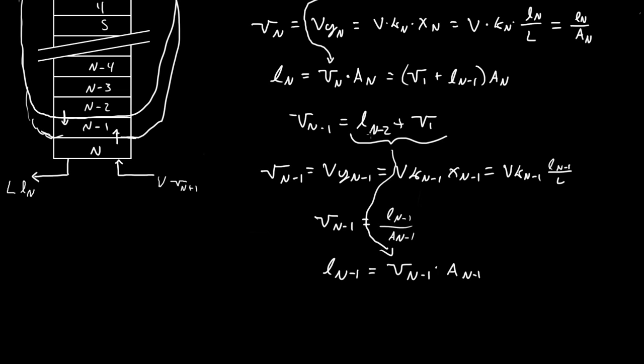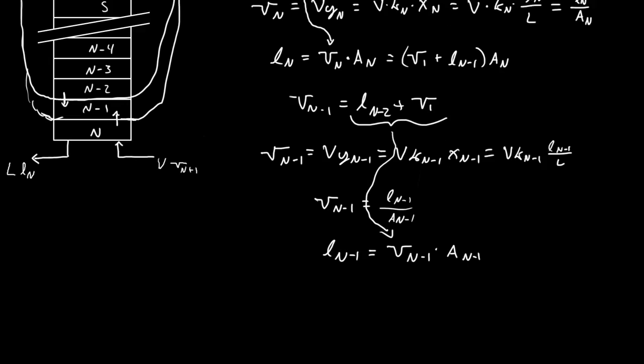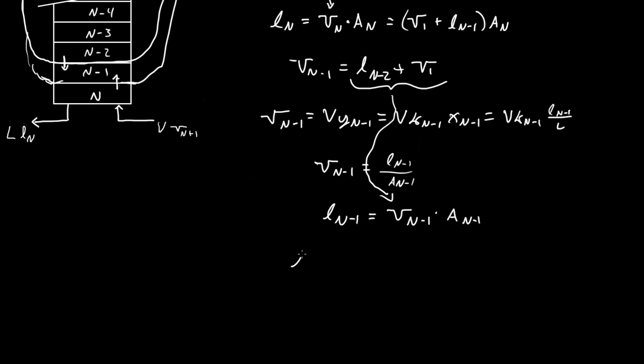We have V_{n-1} equals L_{n-2} plus V_1. So we'll plug that in right there. Now we get L_{n-1} equals (L_{n-2} plus V_1) times A_{n-1}.